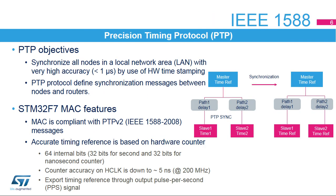The precision timing protocol has been developed to support high-precision synchronization between several nodes of an Ethernet network. The targeted precision is approximately 1 microsecond. This level of precision can only be achieved by hardware support for packet timestamping. The STM32F7 supports PTP messages for synchronization and acknowledge. A 64-bit register indicates the current value of the system time maintained by the MAC. A pulse-per-second signal, or PPS, can be driven on timer 2, so that the timing drift between slave and master clock can be measured.